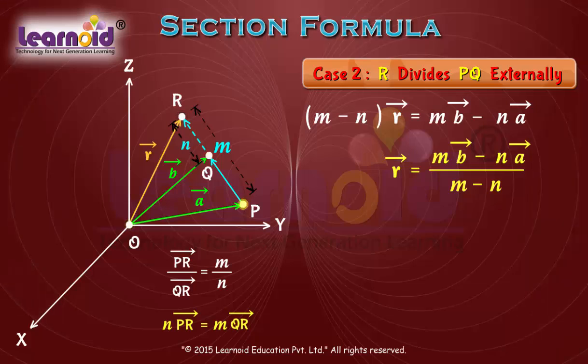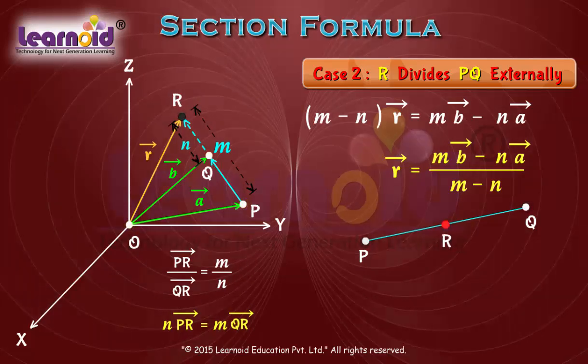On simplifying, we will get r vector is equal to m b minus n a by m minus n. In this way we can find out the position vector of point R dividing line segment PQ in a given ratio m is to n internally or externally.